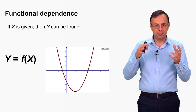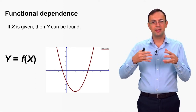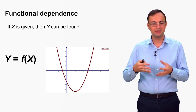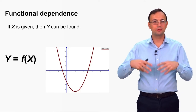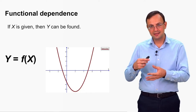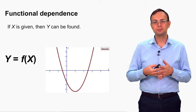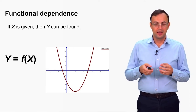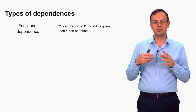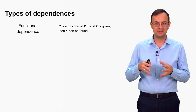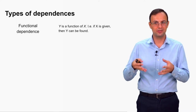So both x and y are random variables. But if x is given — if the experiment is done and the value of x is known — then we can find the value of y for that particular case. If we repeat the experiment, we get another value of x and can find another value of y. To summarize: functional dependence is a situation when y is a function of x, meaning if x is given, we can find y using the formula.